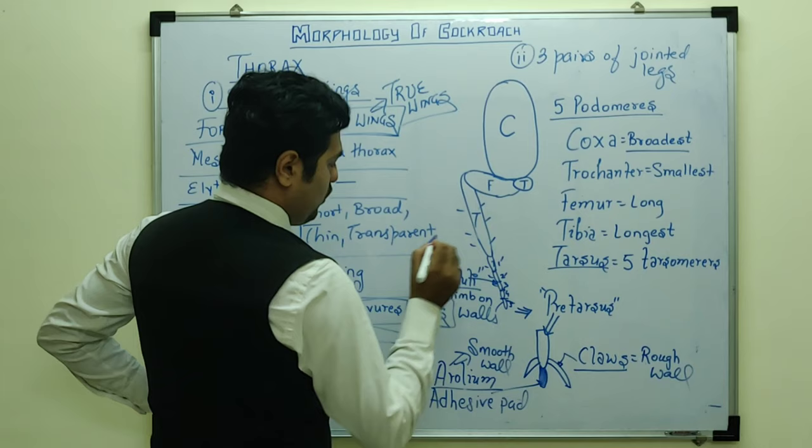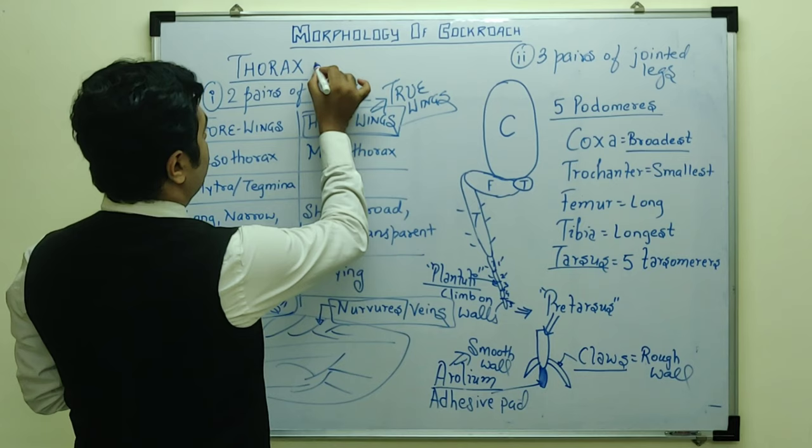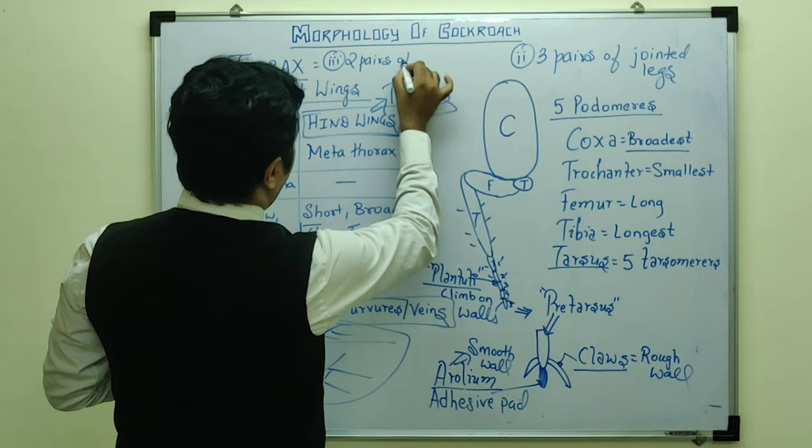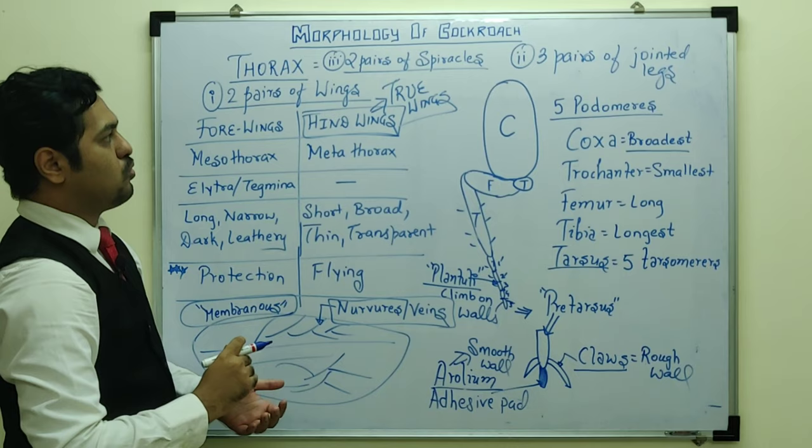For walking on rough surfaces, the claws are used, and on smooth surfaces the arolium is used. Also in the thoracic region there are two pairs of spiracles — in the mesothorax and metathorax — which help in the breathing process.